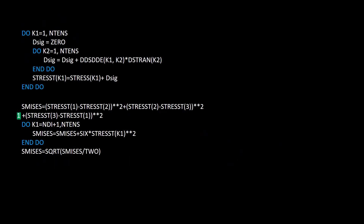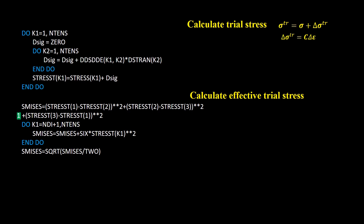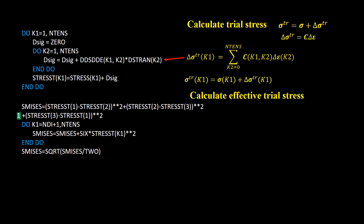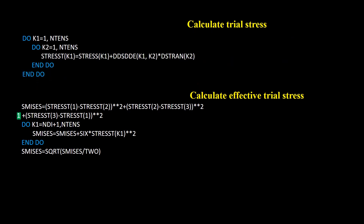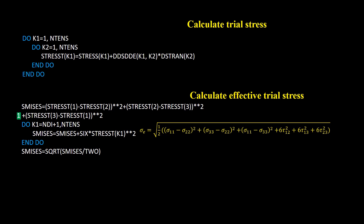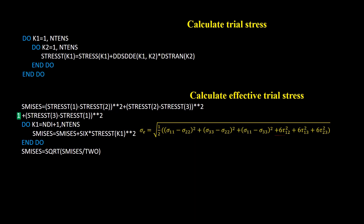Having the elastic stiffness matrix, we can calculate the trial stress. Trial stress is calculated by assuming all the strain increment is elastic strain — we calculate the trial stress increment and add it to the stress array to find the trial stress. Next, we calculate the effective trial stress: first calculate the first three terms, then add the next three terms.